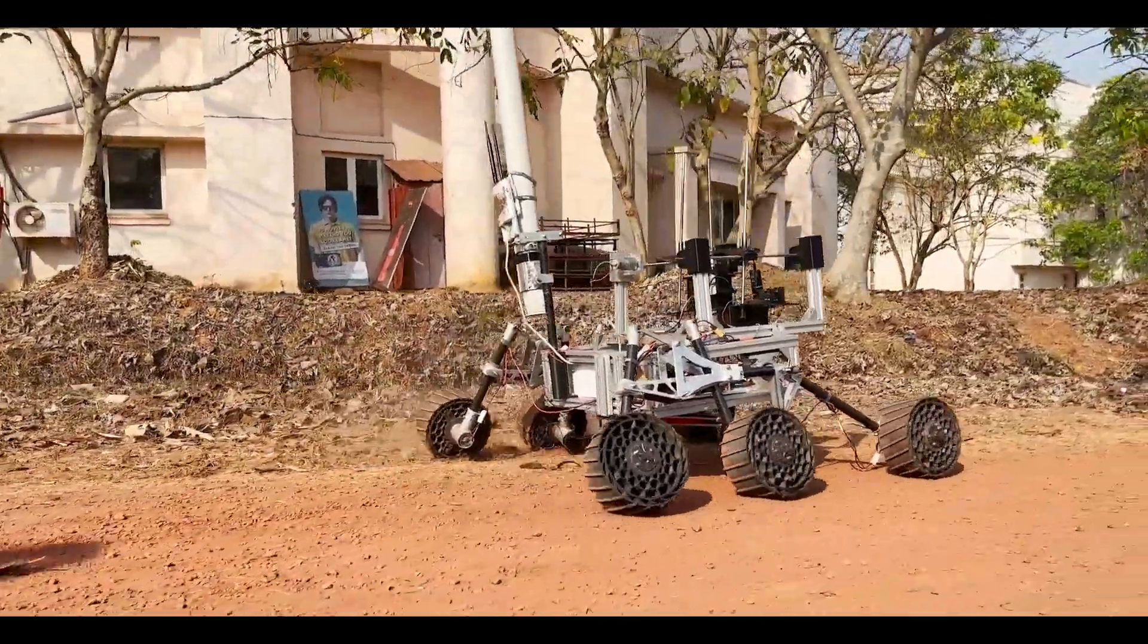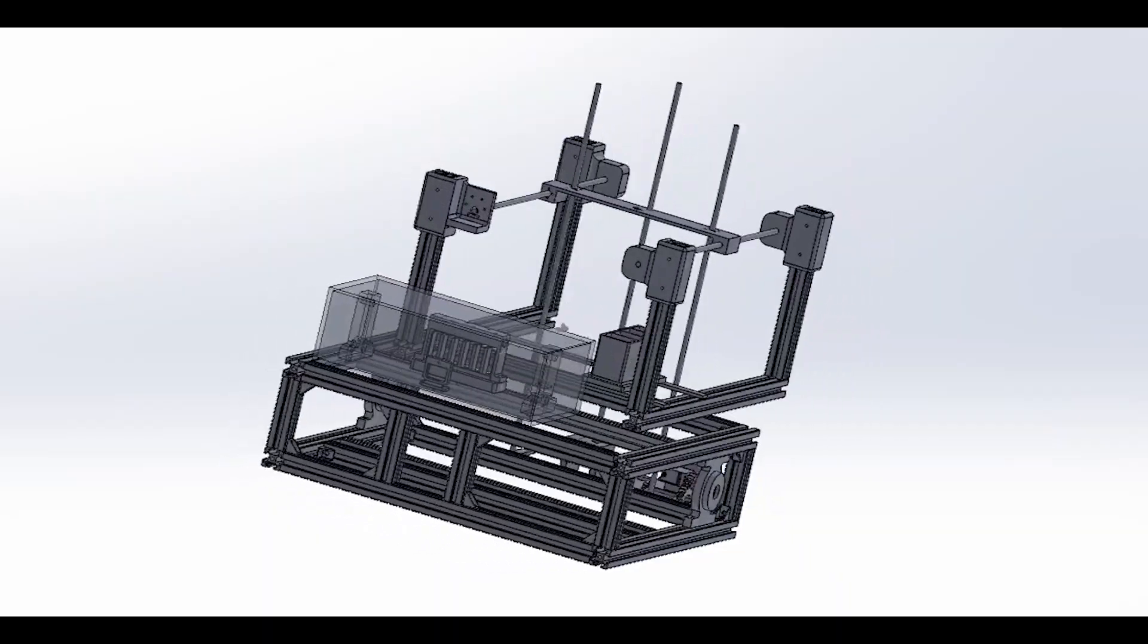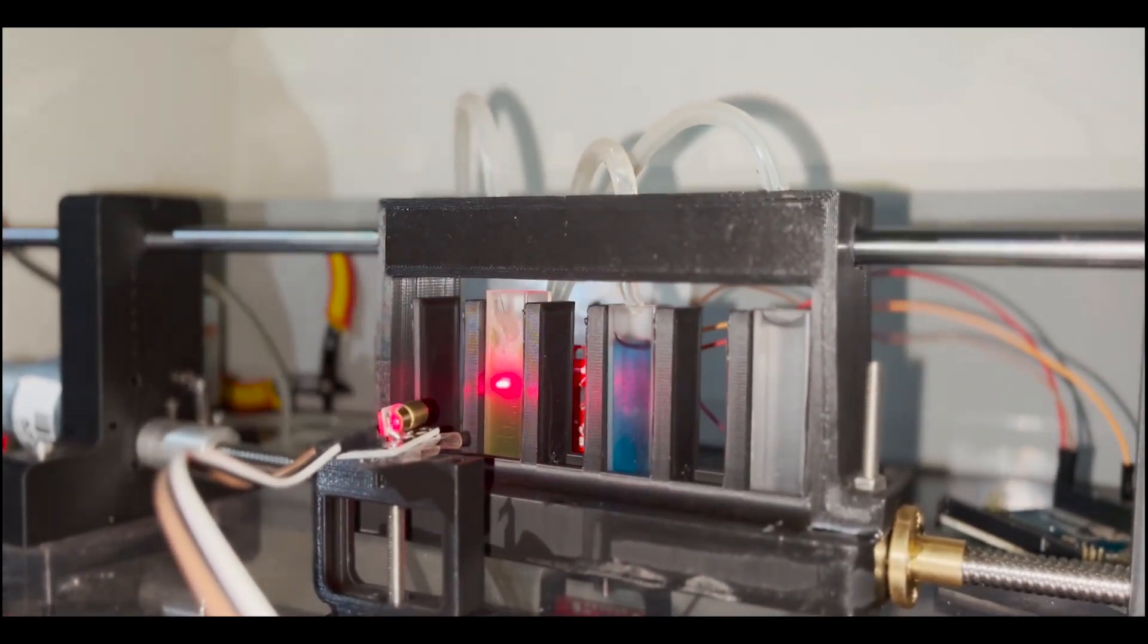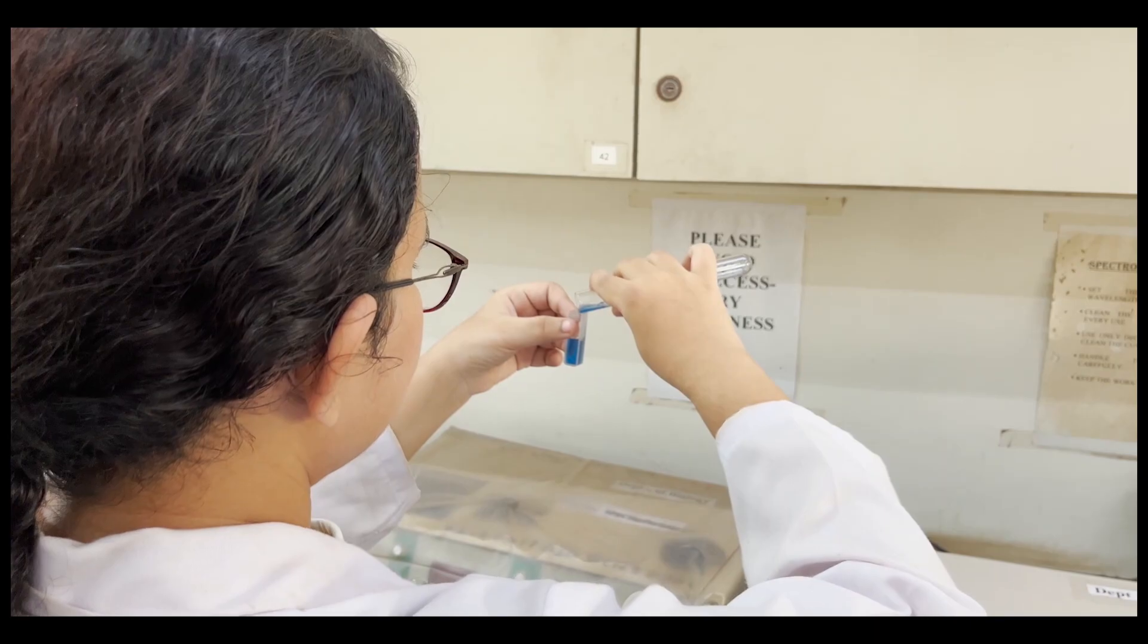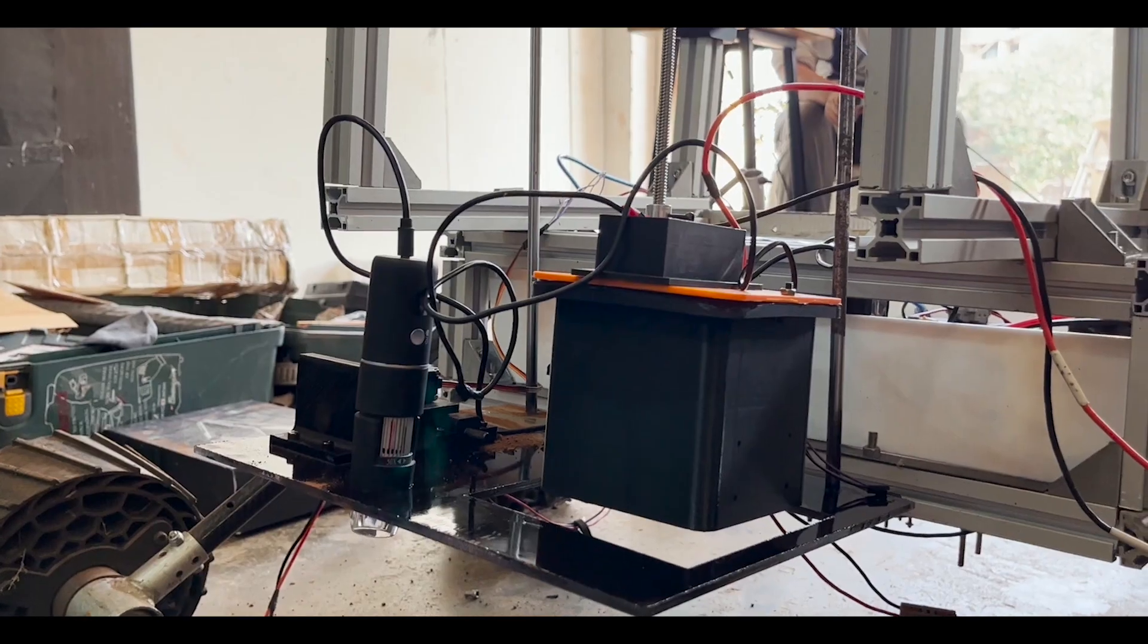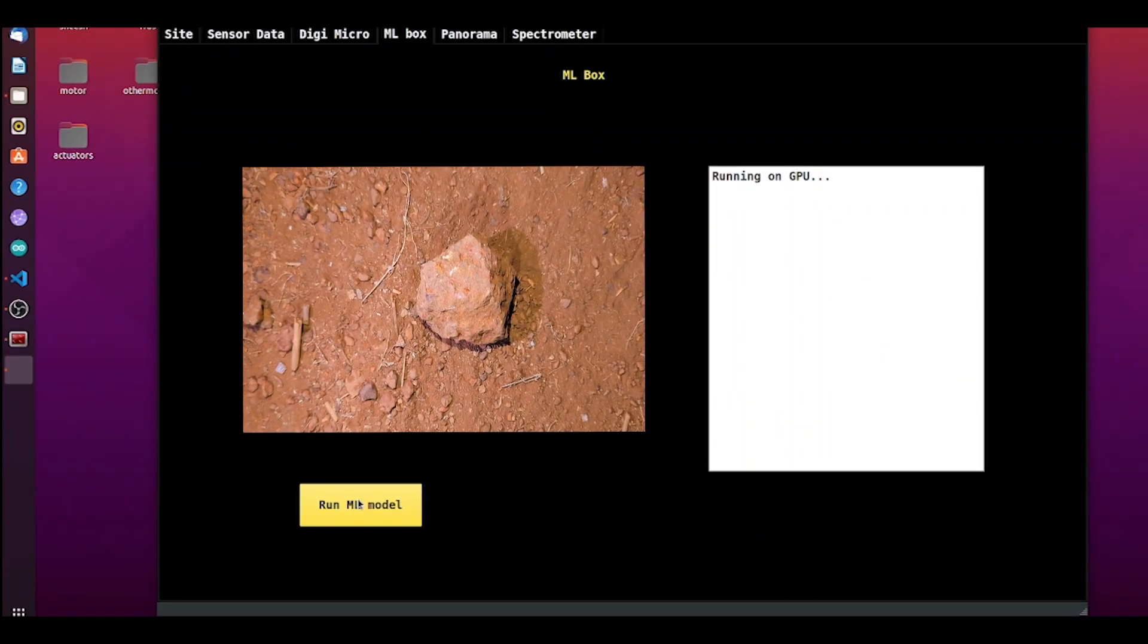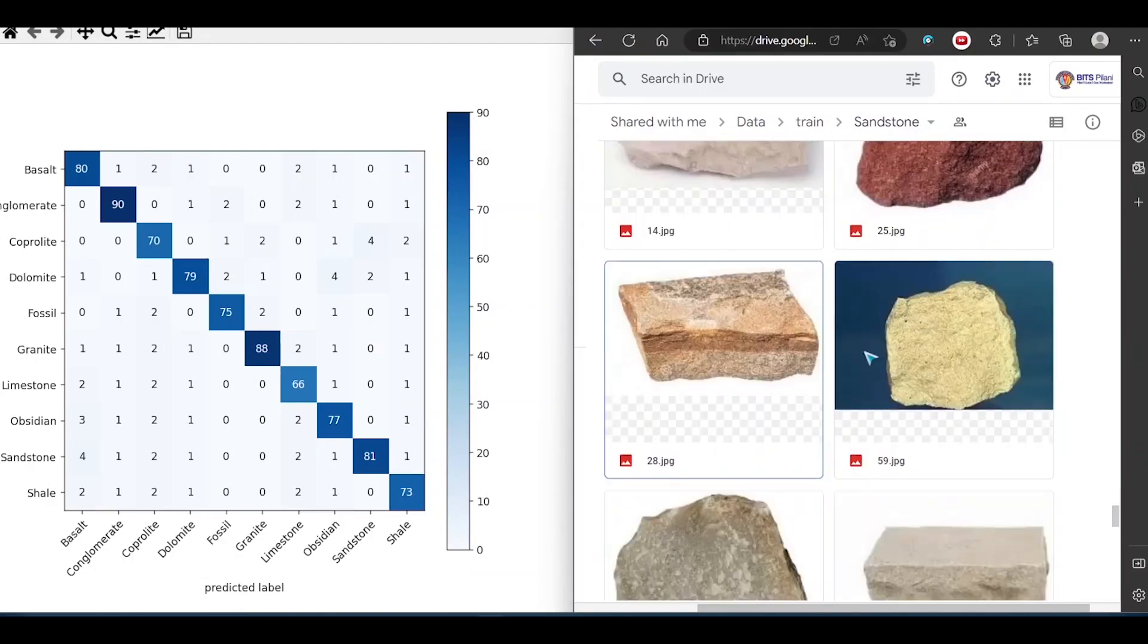The onboard science setup can retrieve up to 4 different soil samples using a scooping mechanism. The collected sample is directed to custom spectrometer following a no spill and no contamination policy. Bradford and chlorophyll tests are performed to check the presence of protein and chlorophyll respectively. The rover houses a 3D printed enclosure with LEDs and a camera used to capture the rocks. The captured image is further processed by a CNN model that classifies rocks into 10 different categories.